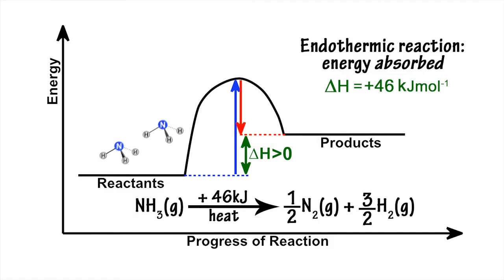In this case, the energy required to break bonds between nitrogen and hydrogen atoms in ammonia is greater than the energy released when bonds form to create nitrogen and hydrogen molecules.